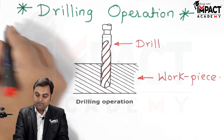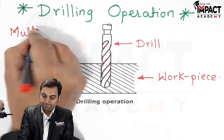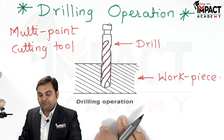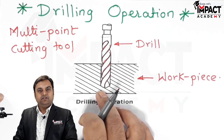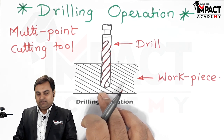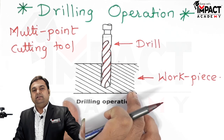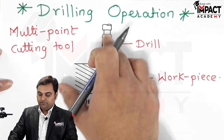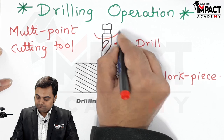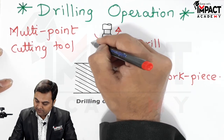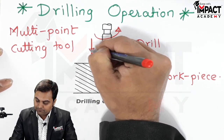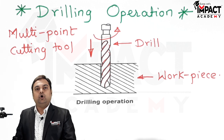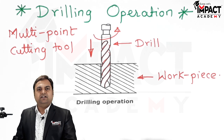The drill is considered as a multi-point cutting tool and this drilling operation is performed in such a way that if it is performed on a drilling machine, then the workpiece is kept stationary, the drill is rotated, and at the same time it is fed inside the workpiece. That is done in case of either portable drilling machines or the various kinds of drilling machines.